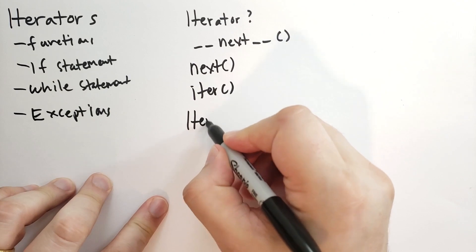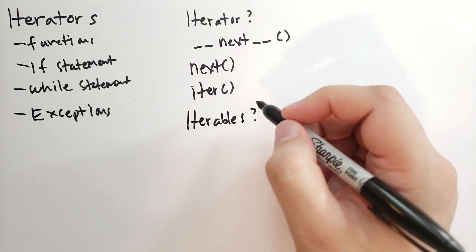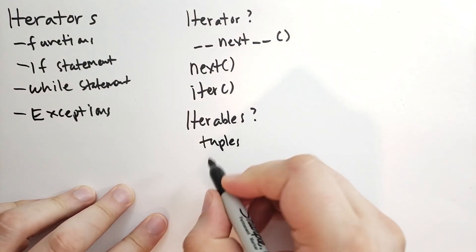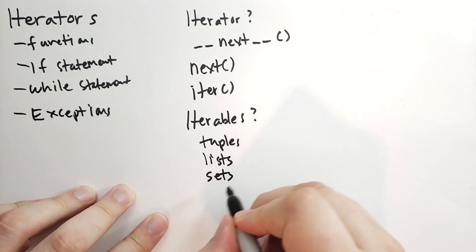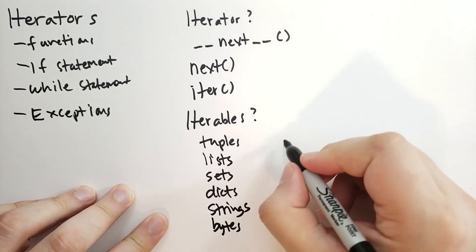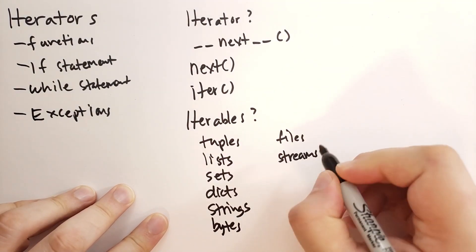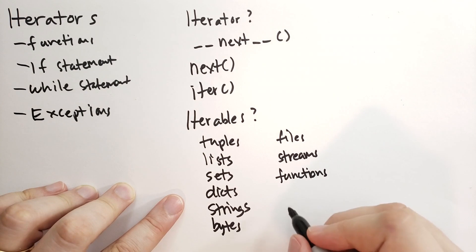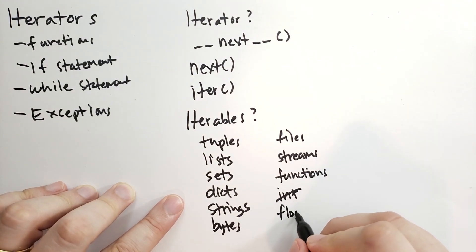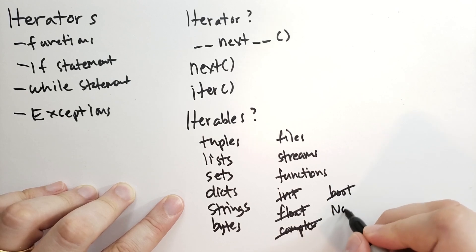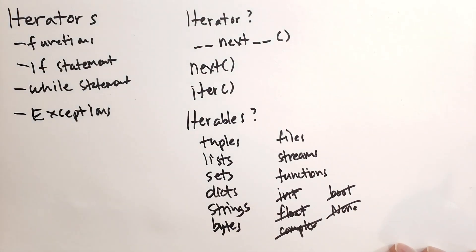Let's talk about what iterables are. The types of things that are iterables is really too numerous to list, but many of the object types in Python are iterable. This includes tuples, lists, sets, dictionaries, strings, bytes, files, and streams such as from a network socket or from a local running process, as well as many functions that can generate sequences. Some values you might know are not iterable — for instance, int, float, complex, bools, and of course None. You can't iterate across these, although they're typically returned as items in an iteration sequence.